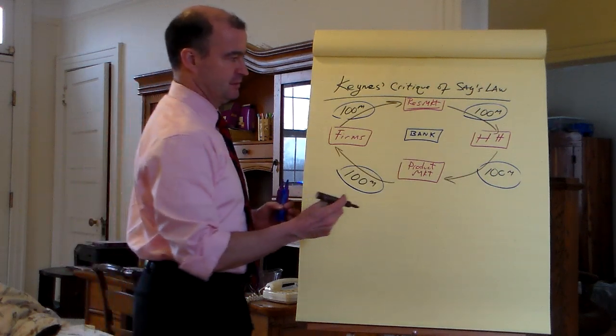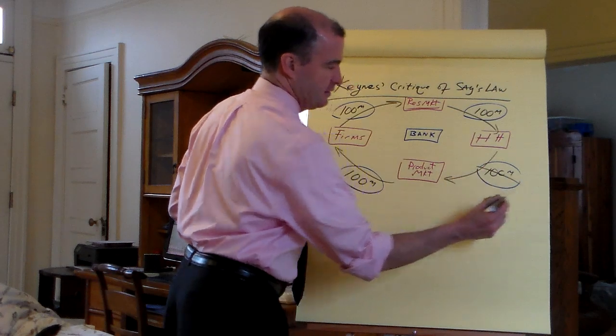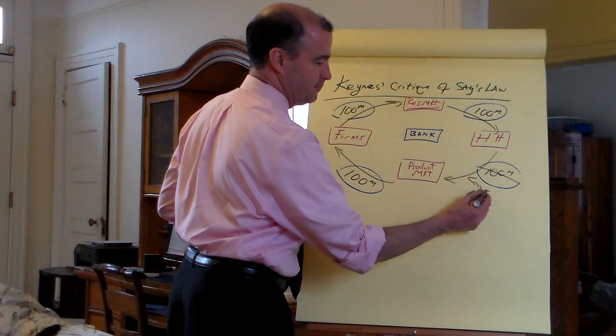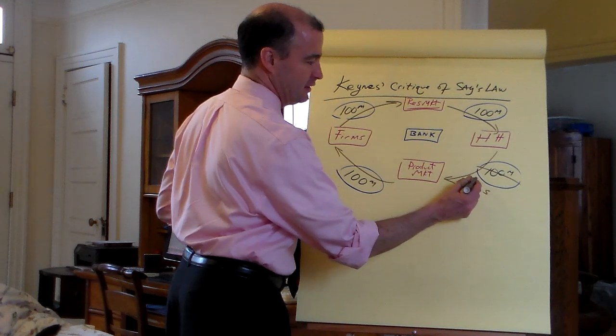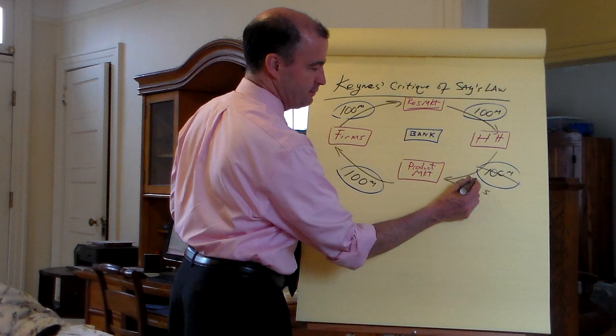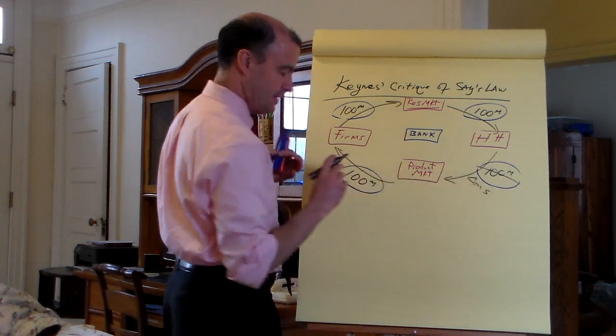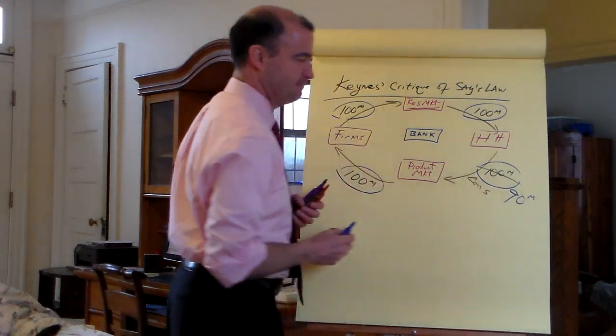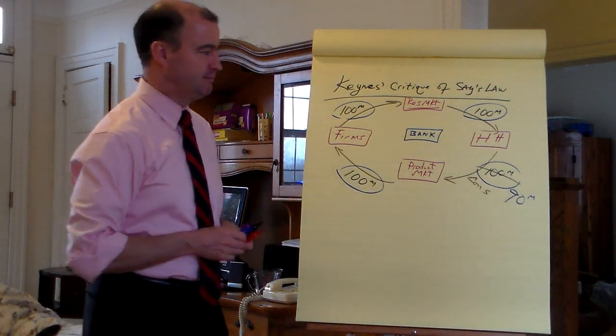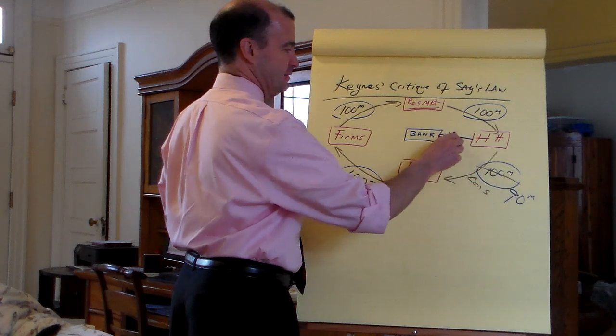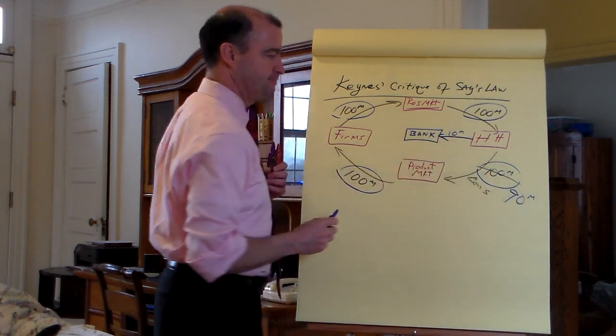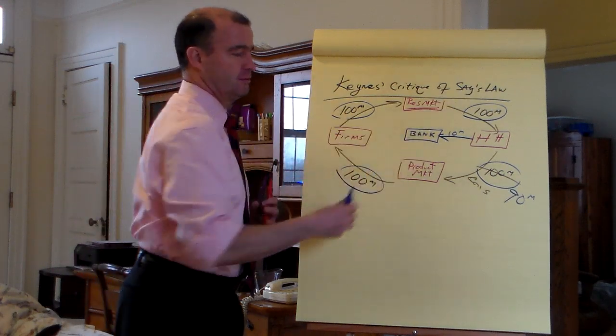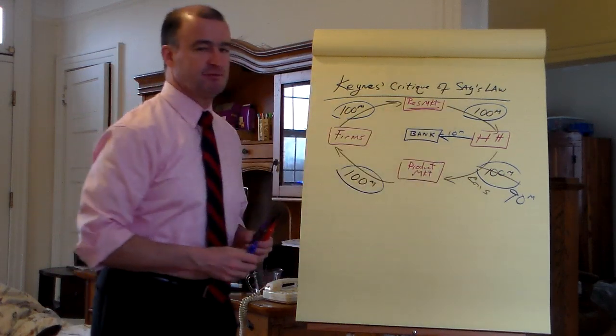The economy is functioning perfectly because new output gets purchased eventually somehow down the line. Now, what if households save? Let's reduce the $100 million expenditure, the consumption of households. Let's reduce that by 10%. Let's say households spend $90 million. What about the other $10 million? That gets deposited in the bank. $10 million.